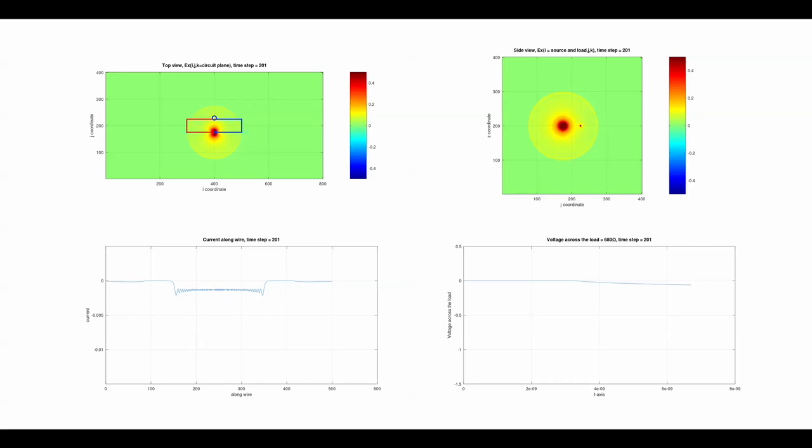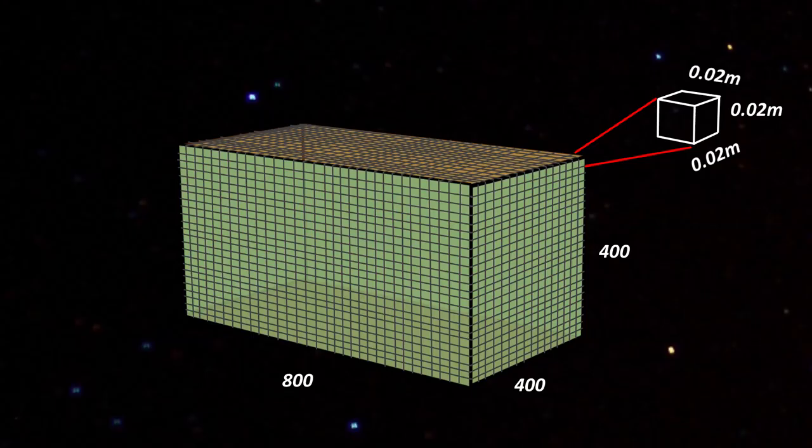The circuit wire is straightened, and the current along the wire is plotted on the bottom left corner, and the voltage across the light bulb as a function of time is shown in the bottom right corner. The volume of space is gridded into 800 x 400 x 400 cubic cells, and each with a side of 0.02 meters.